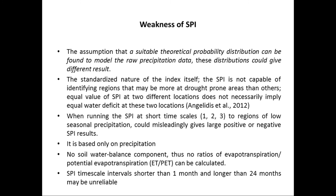Another weakness is that running SPI at shorter timescales in regions of low seasonal precipitation could misleadingly give large positive or negative SPI results. Additionally, SPI is based only on precipitation with no soil water balance component, so no ratios of actual to potential evapotranspiration can be calculated. Finally, SPI timescale intervals shorter than one month or longer than 24 months may be unreliable.